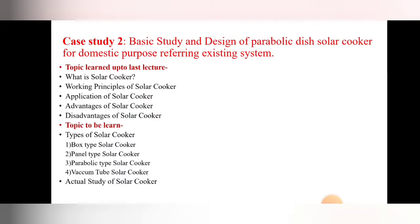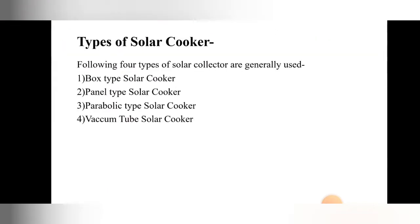In today's lecture we are going to see the next topic: the types of solar cooker. Four types are given — box type, panel type, parabolic type, and vacuum tube solar cooker — and at the end we will cover the actual case study. Two topics remain, and the first one we are covering today is the types of solar cooker.